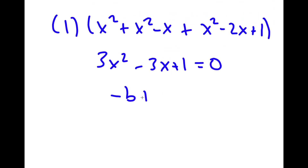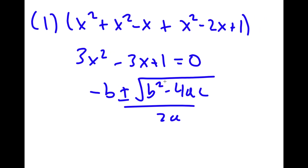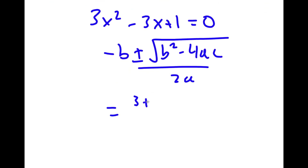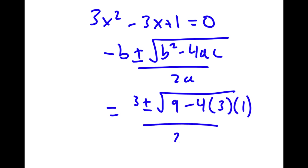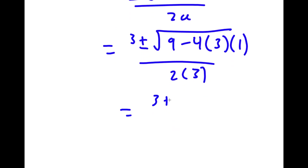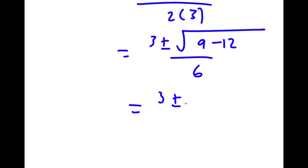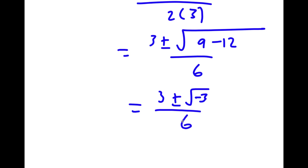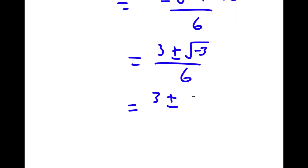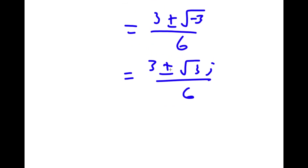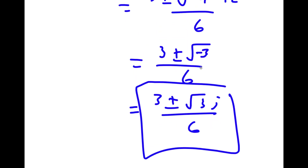To solve this I use the quadratic formula: negative b plus or minus the square root of b squared minus 4ac, all over 2a. This gives 3 plus or minus the square root of negative 3 squared minus 4 times 3 times 1, all over 2 times 3, which equals 3 plus or minus the square root of 9 minus 12 over 6, which is 3 plus or minus the square root of negative 3, or plus or minus the square root of 3 times i, over 6. So these are my two solutions.